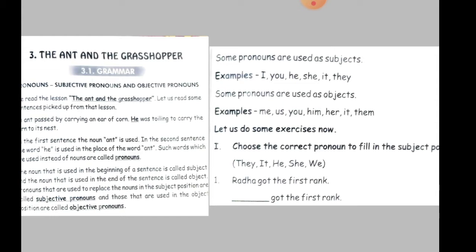First of all, you all must be aware about noun. Noun kisai kehti hain - this concept should be clear to you. Noun kya hota hai - name of a person, name of a place, name of a thing, or sometimes things we can't even see. Like love, pain - we can't see them, but those words are also nouns. Now we will see what is pronoun.